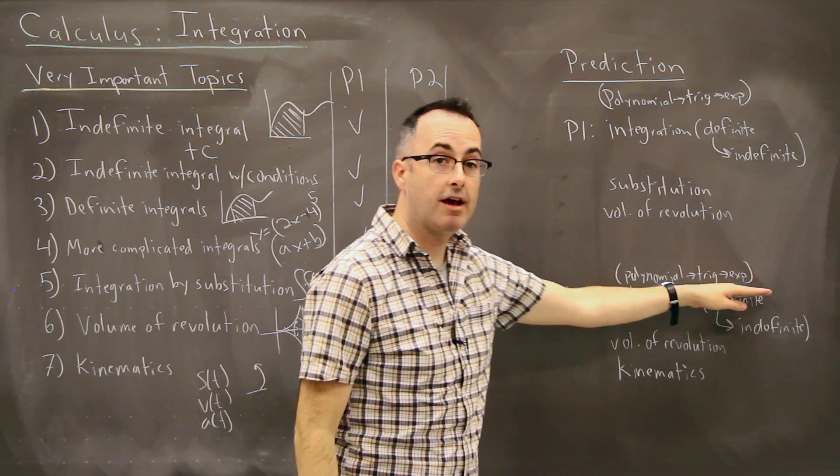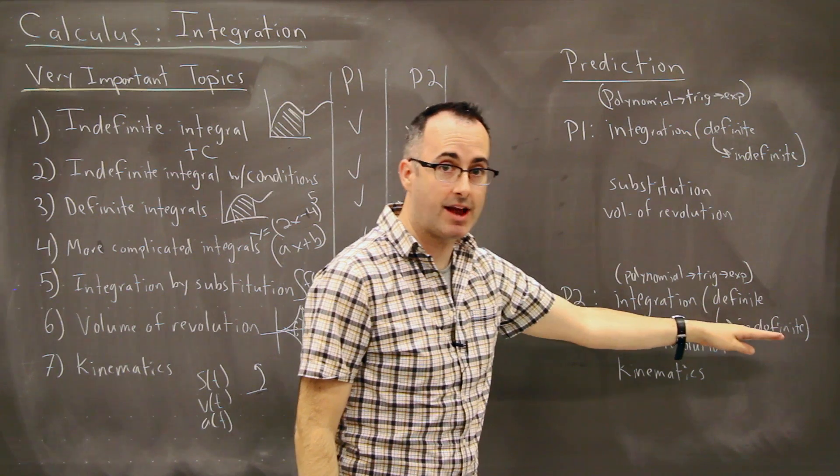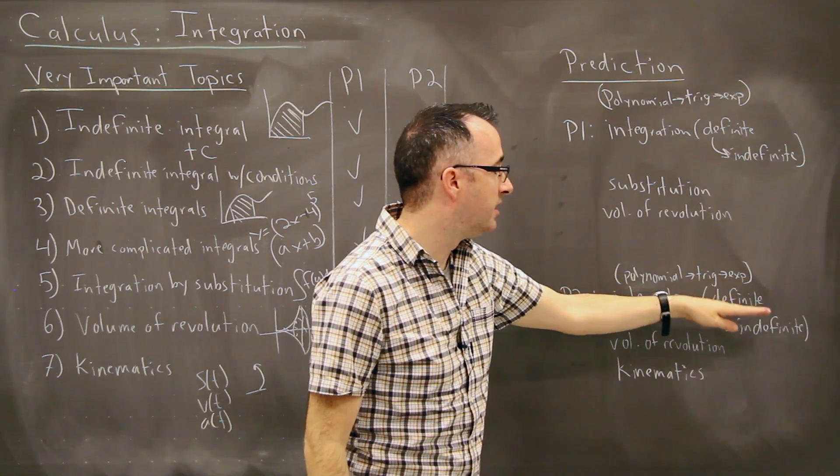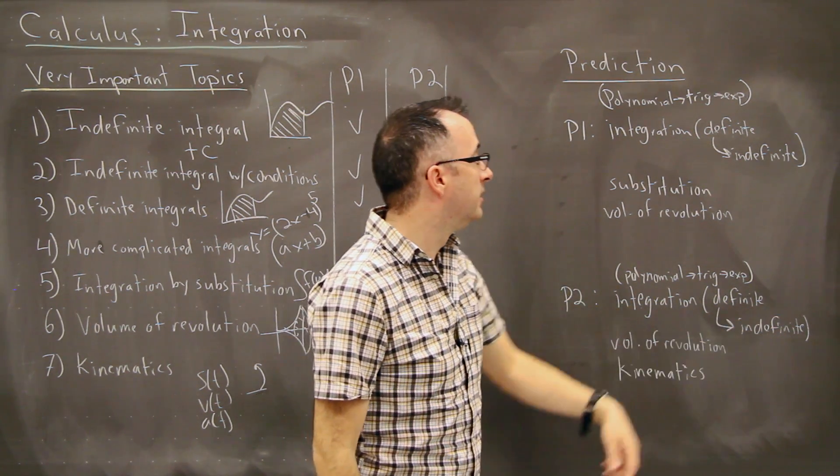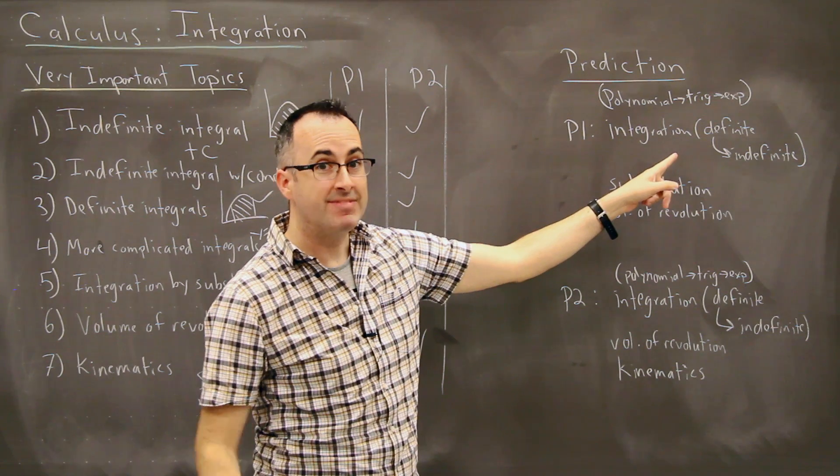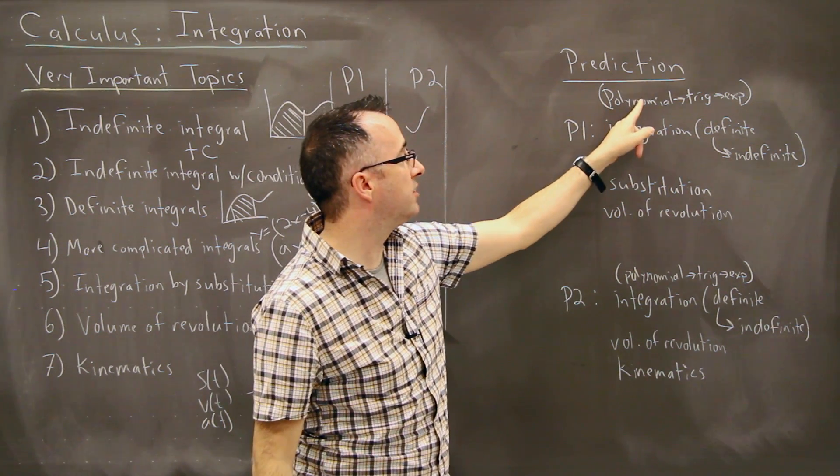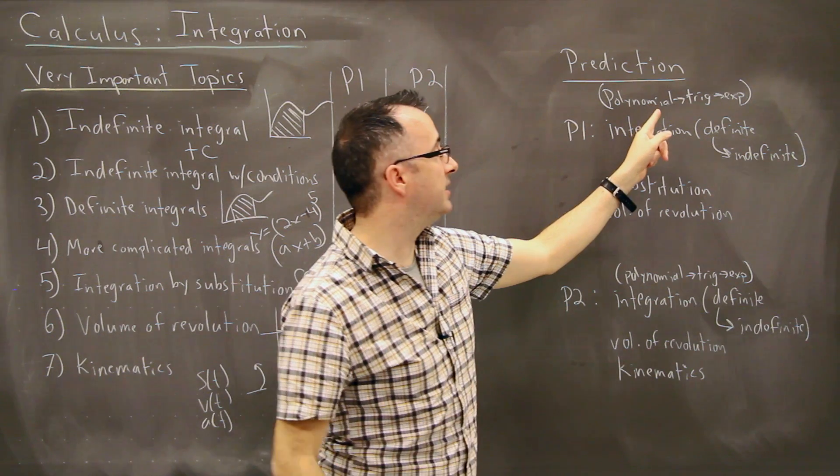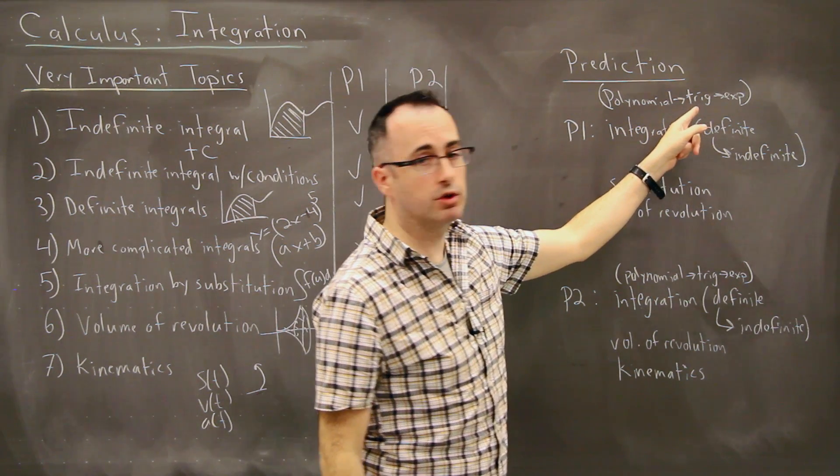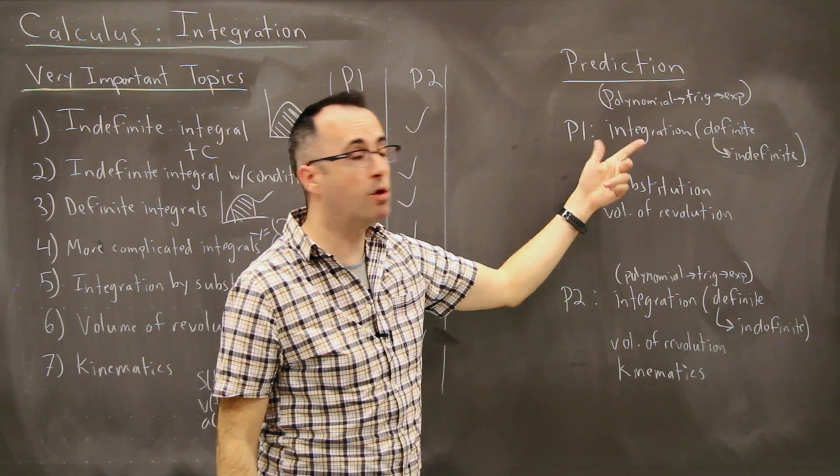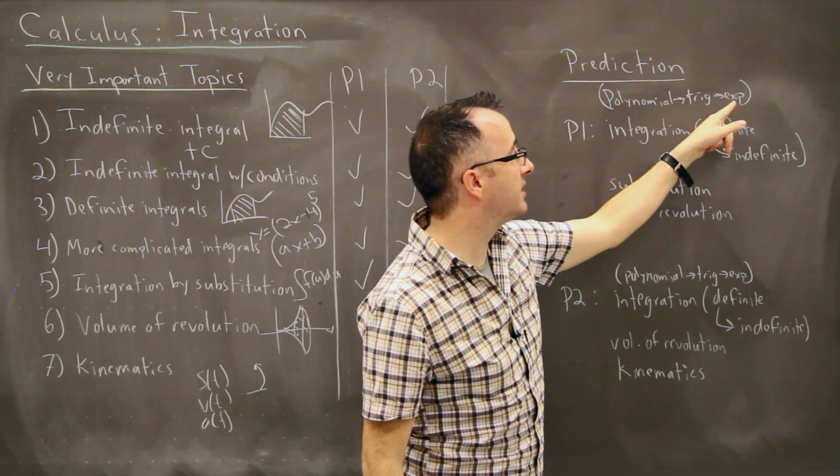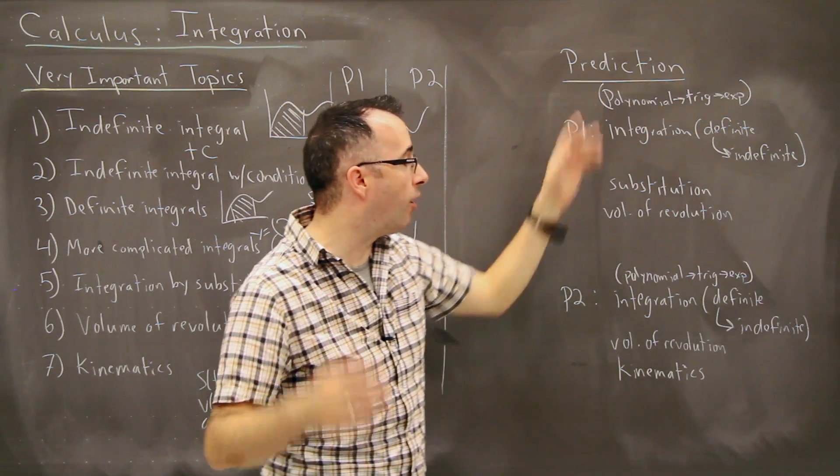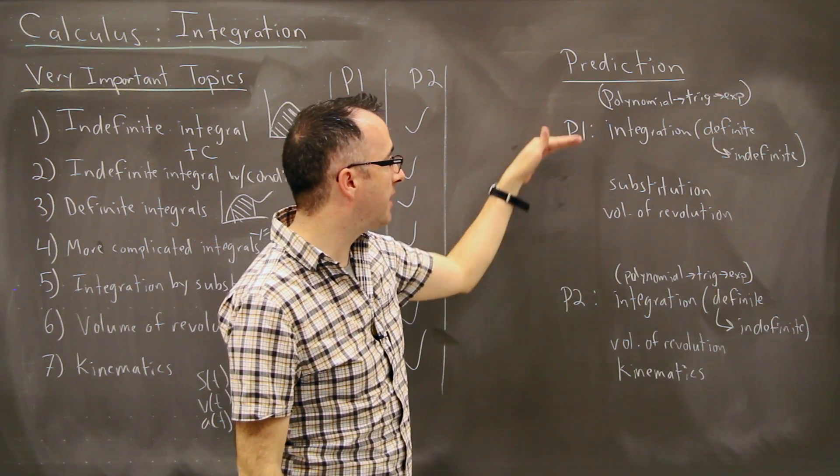Same thing with paper two, integration, definite, and then indefinite in that order. So definite is most common, indefinite slightly less common. And if you're going to do integration, it's most likely going to be polynomial type. That's the first one. Second most likely is trigonometric, so you're looking with sine and cos. And then third most likely is with exponential, using e to the power of something.